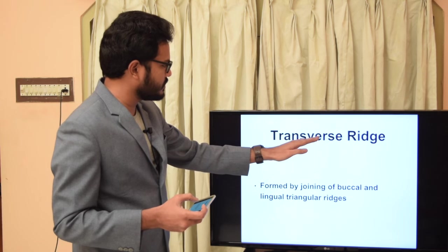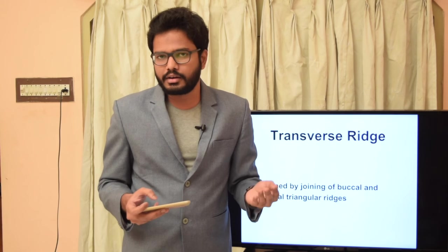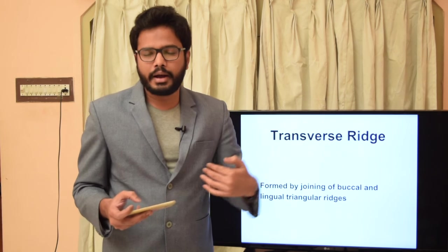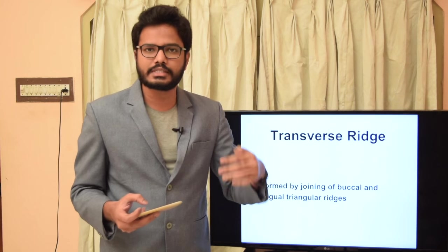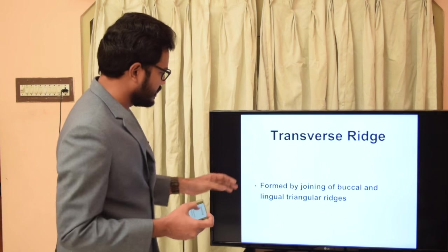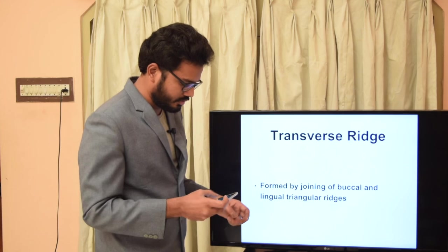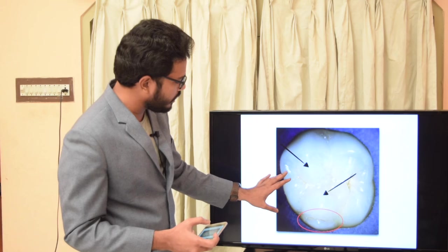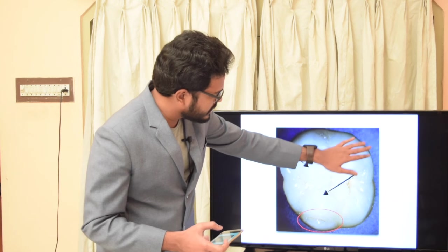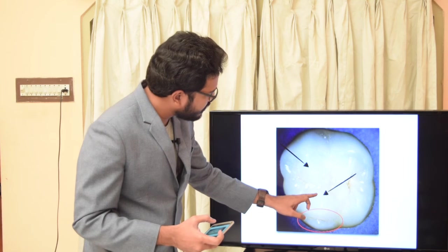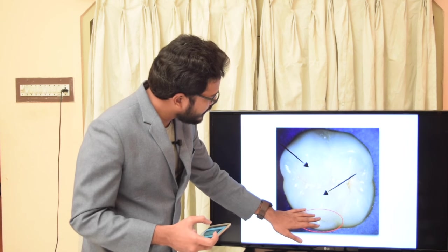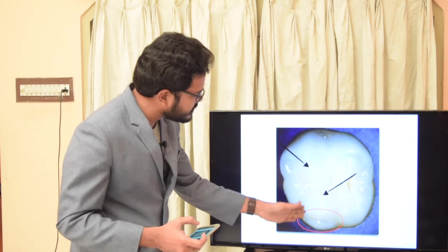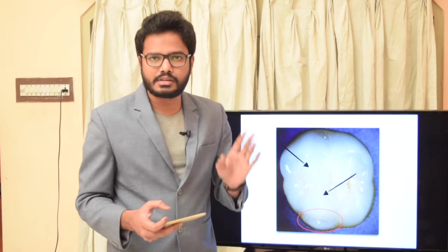The transverse ridge is formed by the union of two triangular ridges. When a buccal triangular ridge and a lingual triangular ridge combine and traverse the occlusal surface, we call it a transverse ridge. For example, the triangular ridges of the mesopalatal and mesiobuccal cusps joining on a maxillary first molar form a transverse ridge.